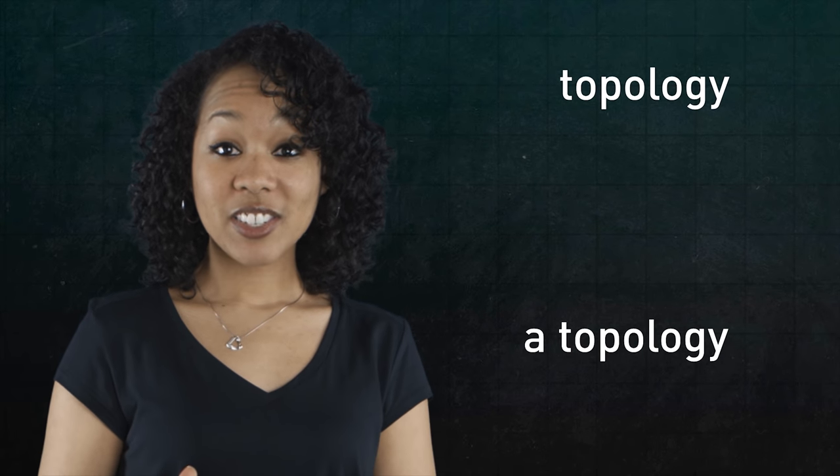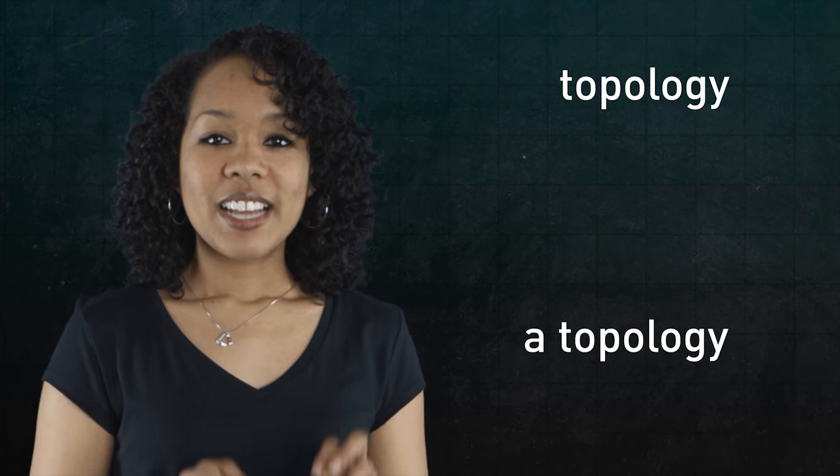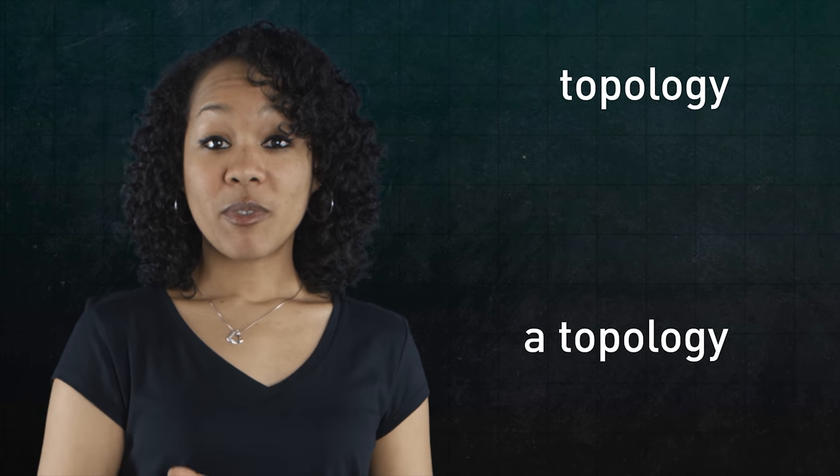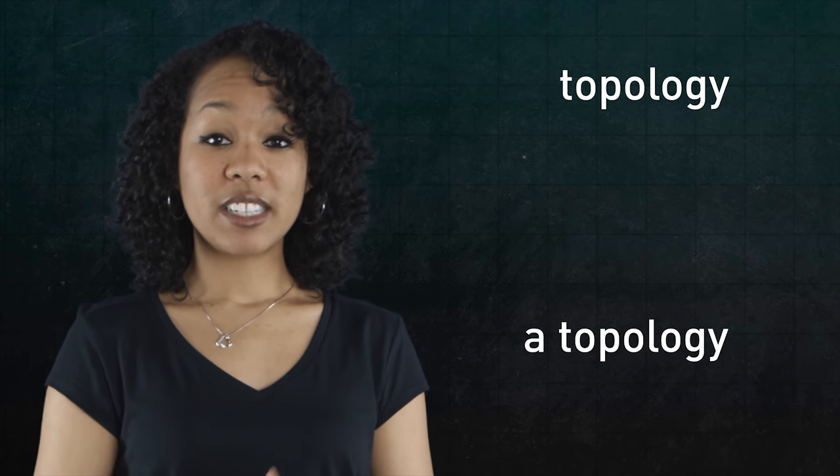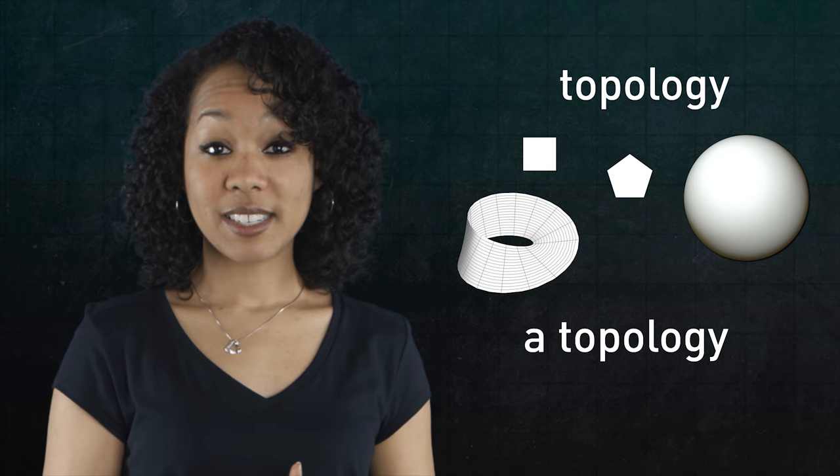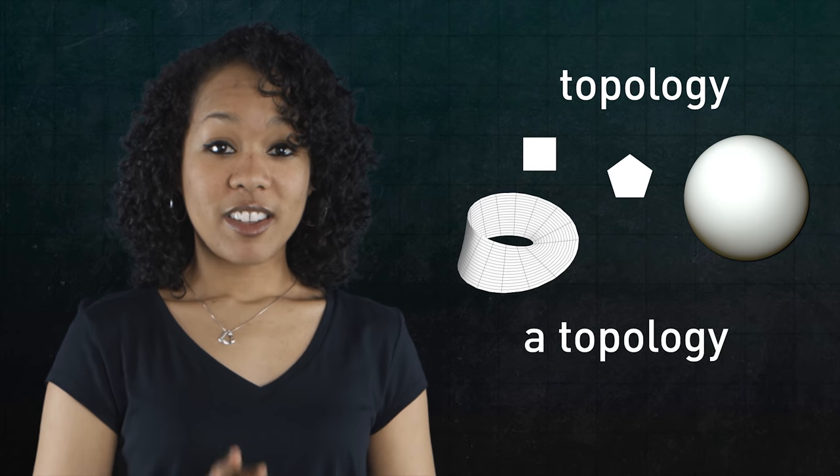To start, did you know that there is a difference between topology and a topology? The article A is very important. Topology, without an A before it, is that branch of math that studies shapes or topological spaces. A topology, on the other hand, is different.